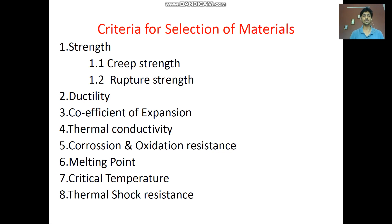In creep, both mechanical load and thermal load act simultaneously. In rupture, loads act from different planes or different angles. Based on these conditions, we determine which type of material needs to be selected — this gives the first criterion, which is strength.